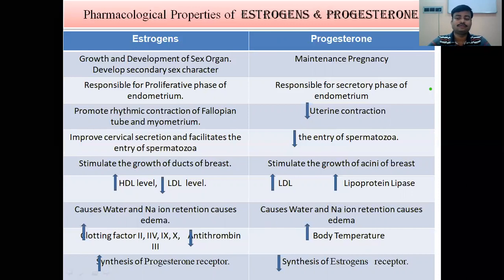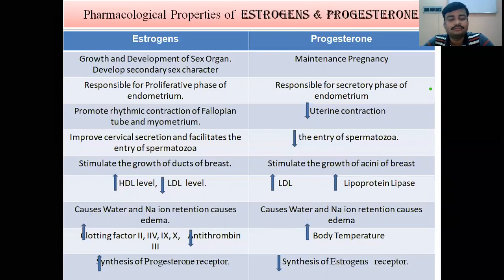Progesterone increases basal body temperature. During the menstrual cycle, there is a sudden rise in body temperature at day 14 during the ovulation phase, and from that point the temperature remains elevated. Estrogen stimulates the synthesis of progesterone receptors, whereas progesterone reduces the synthesis of estrogen receptors.